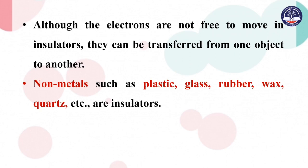Materials such as plastic, glass, rubber, wax, and similar substances are insulators. Dry wood is also an example of an insulating material.